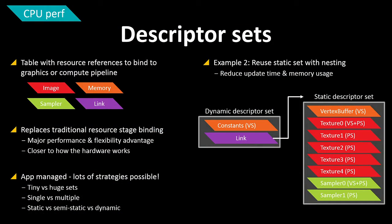A more interesting case: many objects are static, or at least their resource references are. When we load a mesh, we know it'll use a vertex buffer and a set of textures, and samplers are usually static too. So we can allocate a static descriptor set up front and link to it. For every draw call, we only have dynamic vertex constants and just link to the static descriptor set — significantly reducing per-draw-call overhead. This model is also closer to how hardware actually works.